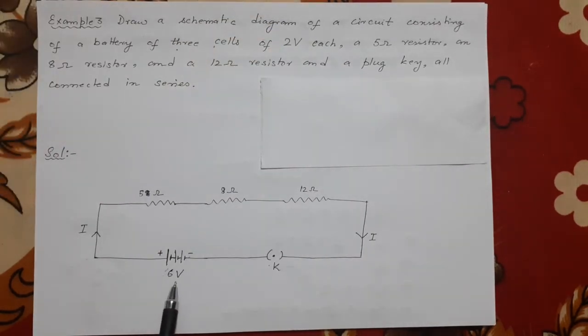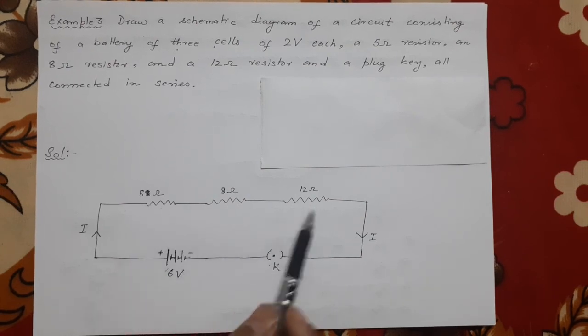So this much was asked, draw a diagram. This is important: 2 volt battery, 3 are there, that is why it becomes 2 into 3, 6 volt. Okay, 2 plus 2 plus 2 here, series connection directly in a line.